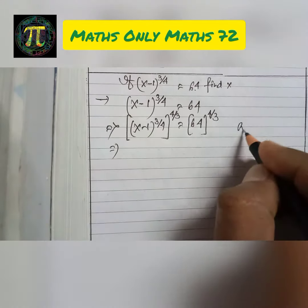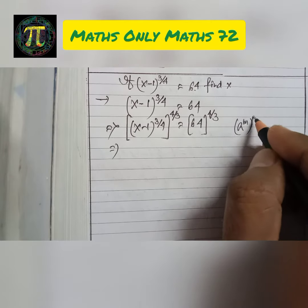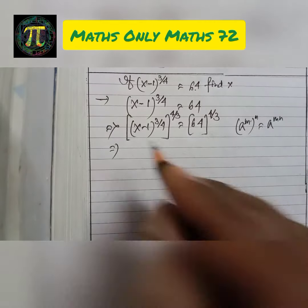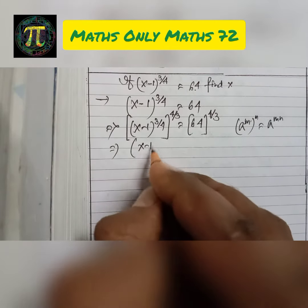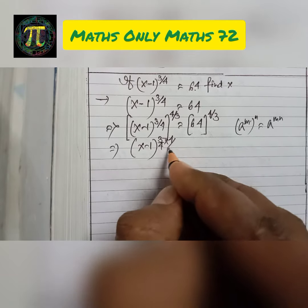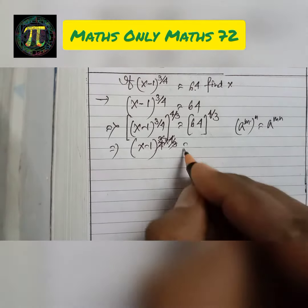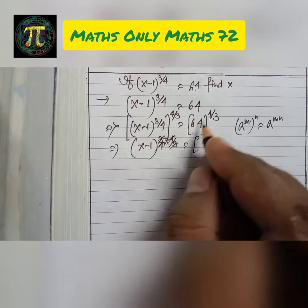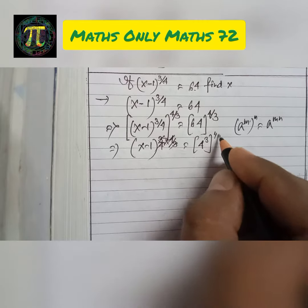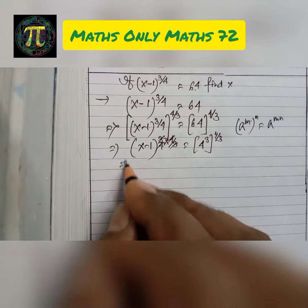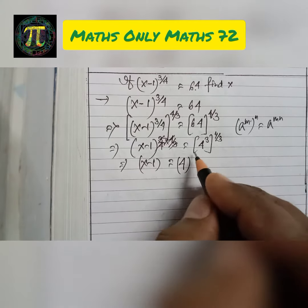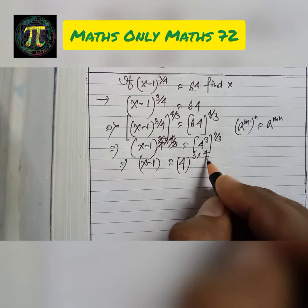We know that a to the power m, whole to the power n, equals a to the power mn. We multiply the exponents: (x minus 1) to the power 3 by 4 multiplied by 4 by 3. We can write 64 as 4 cube. So x minus 1 equals 4 to the power 3 into 4 by 3.